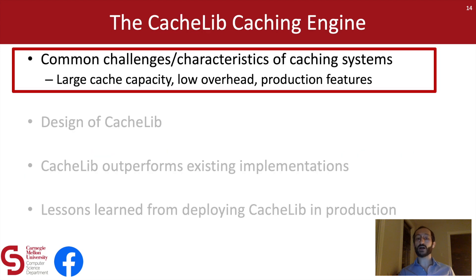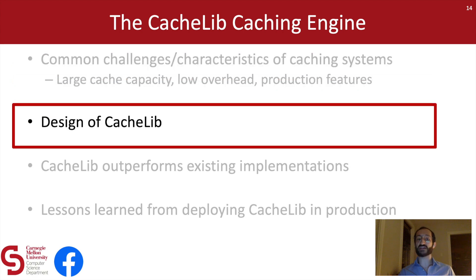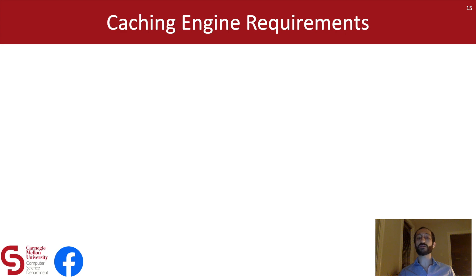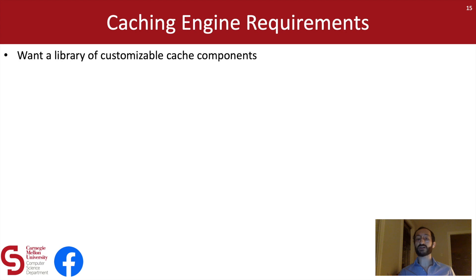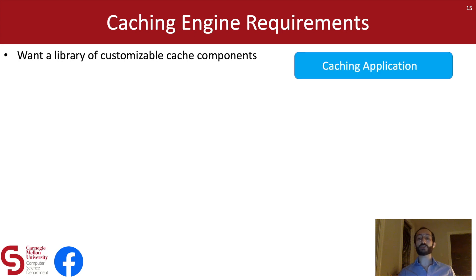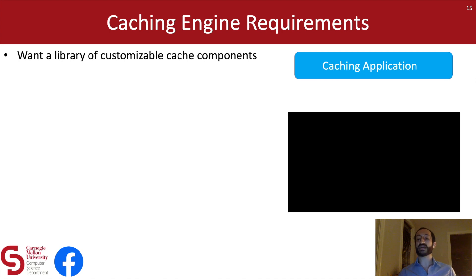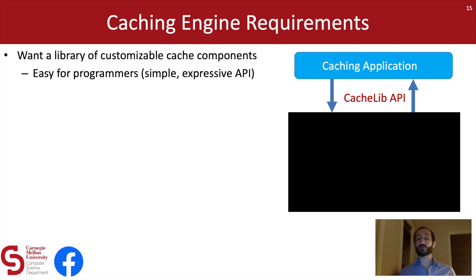Our solution to all of these problems is to address these challenges once using a unified cache implementation. Now that we've seen some of the common challenges, I want to discuss how we address these through the design of CacheLib. CacheLib needs to be a library of customizable cache components — the idea is that application programmers can write their caching application and assume the existence of some black-box cache implementation, which can be accessed through a CacheLib API. This API needs to be easy for programmers to use — it should be a simple, expressive API.